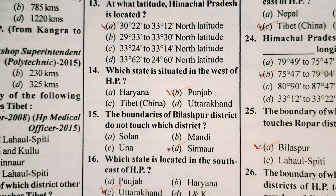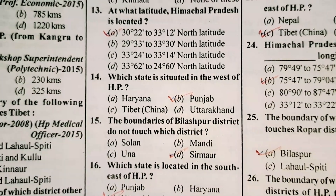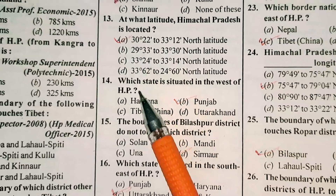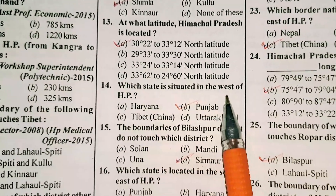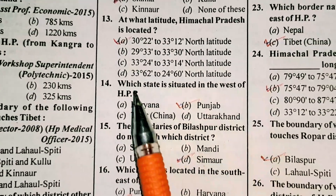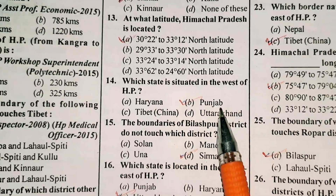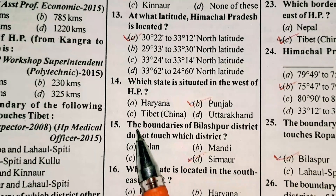Today we are going to discuss the second part of geography of Himachal Pradesh. Question number 14 is: which state is situated in the west of Himachal Pradesh? Option B is correct — Punjab.